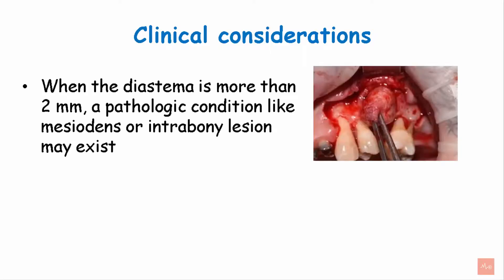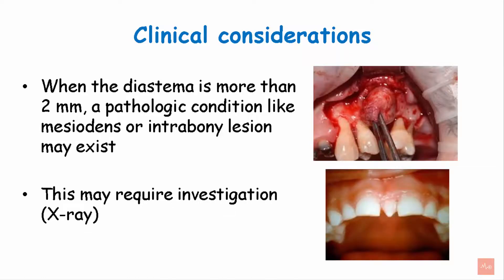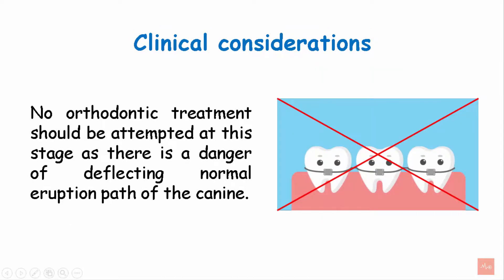Clinical considerations: when the diastema is more than 2 mm, a pathologic condition like mesiodense or intrabony lesion may exist. This may require proper investigation like X-rays. No orthodontic treatment should be attempted at this stage, as there is a danger of deflecting the normal eruption path of the canine. It is a self-correcting malocclusion, hence no orthodontic treatment should be attempted.